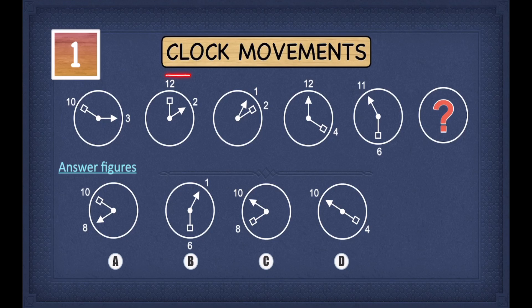Now, let's have a look at a clock movements example. In these types of questions, the first thing we have to do is to have a look at the types of hands we have in the clock.